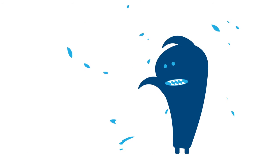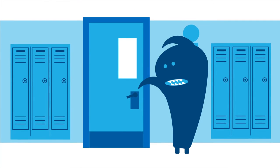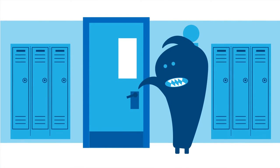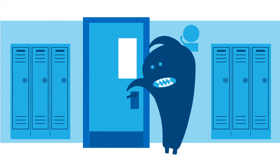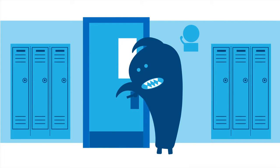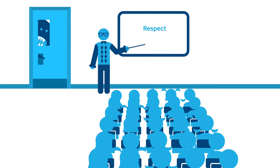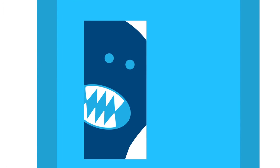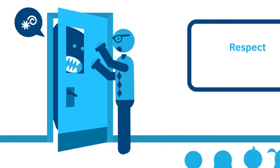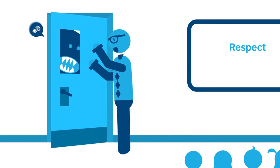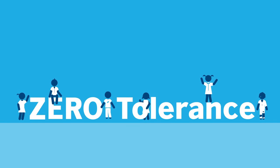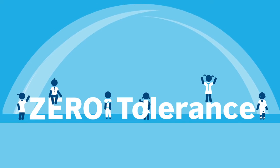Child abuse can be caused by anyone — adults, peers or other children or teenagers — and it can take place within families, schools or other contexts. Neither teachers nor colleagues from other departments can eliminate child abuse risks, but we must do everything we can to prevent them. We at the British Council have a zero tolerance attitude against child abuse and we have specific mechanisms in place to safeguard the young people we work with.